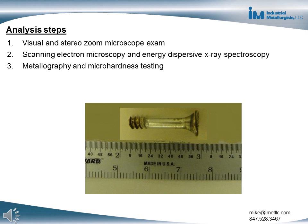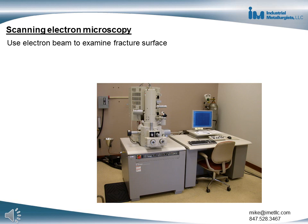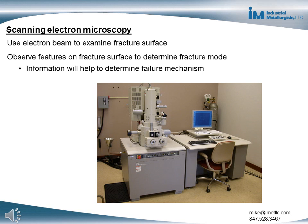The observations from step one were not remarkable, so the results from steps two and three will be discussed. A scanning electron microscope uses a beam of electrons to image the sample. One use of this microscope is to observe the features on a fracture surface to determine the fracture mode, which helps determine the failure mechanism.